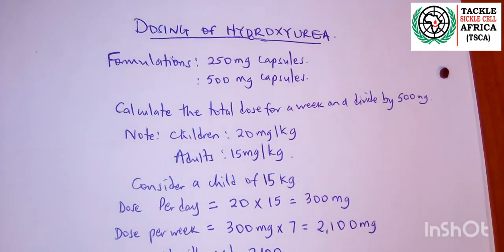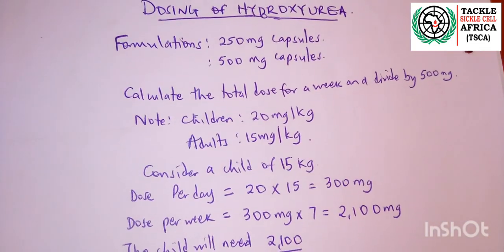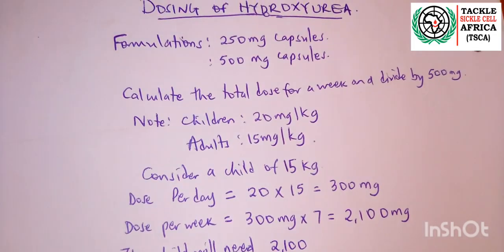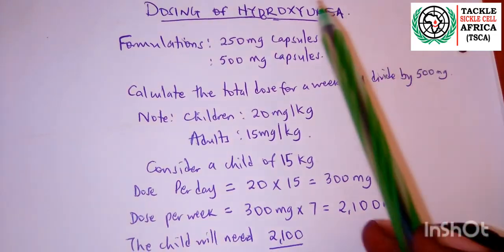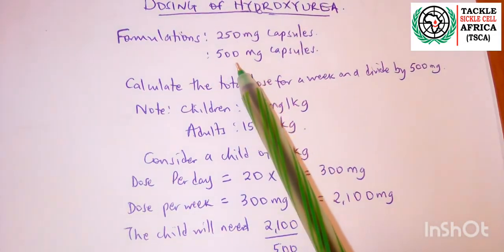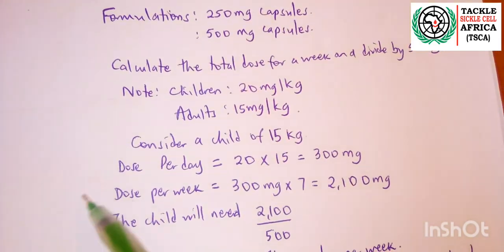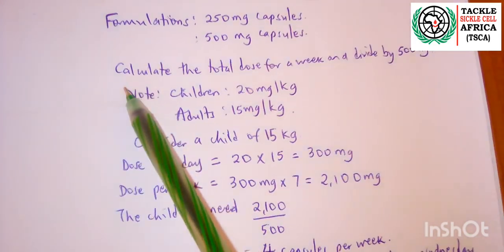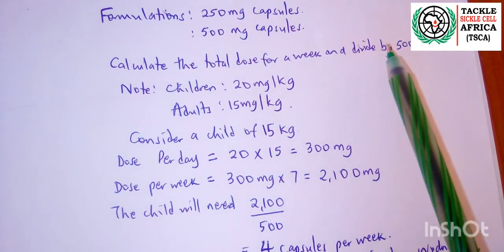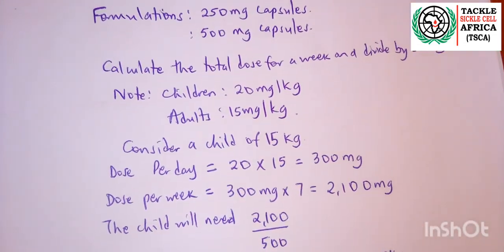Hydroxyurea has become a life-saving medication for sickle cell patients. One of the most important things you need to know is that hydroxyurea comes as capsules in different formulations — some health facilities receive 250 milligram capsules and others receive 50 milligram capsules, like us here at the regional referral hospital. The formula is straightforward: calculate the total dose for a week and then divide by 50 milligrams or 250 milligrams, depending on the formulation you are using.